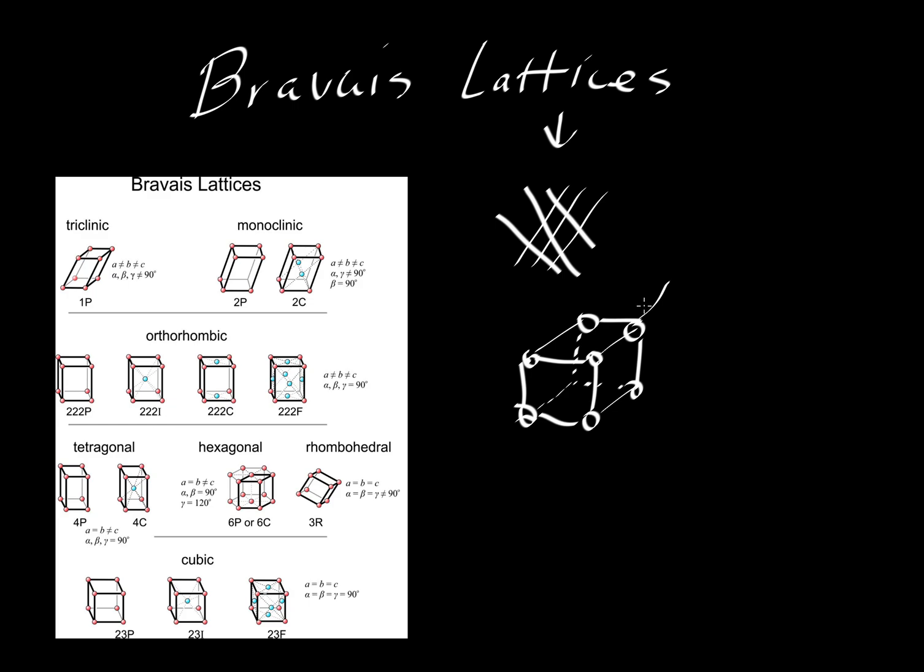The Bravais lattices are a collection of so-called nodes. These nodes are strictly thought of as a mathematical point. You can think of them as atoms. Some people don't like it when you call them atoms. They can be molecular clusters, but strictly the way they're thought of is kind of a mathematical point.